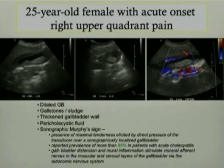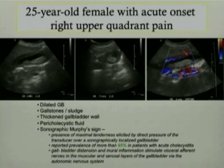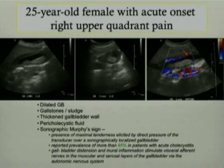However, the problem we most often encounter is that most of these patients who come from the ED to the radiology suite are already medicated, so the sign is not extremely useful because they do not have any tenderness. We have to rely on other sonographic signs to make the diagnosis. The physiology behind sonographic Murphy's sign is that gallbladder distension and inflammation stimulate the visceral afferent nerves in the muscular and serous layers of the gallbladder via the autonomic nervous system, creating tenderness right over the gallbladder.